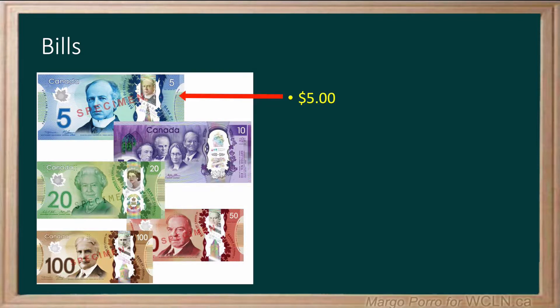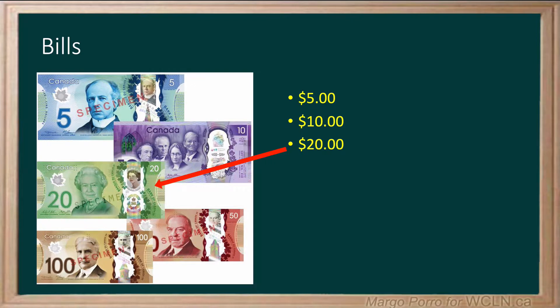Five dollars is always blue. Ten dollars is always purple. Twenty dollars is green. Fifty dollars is red. And one hundred dollars is brown.